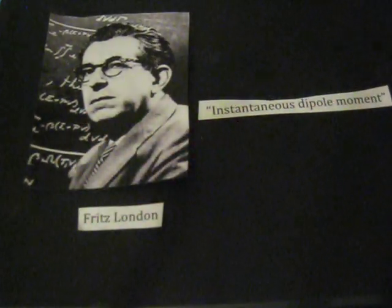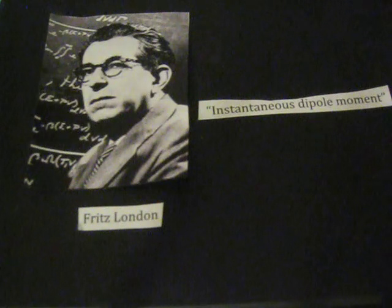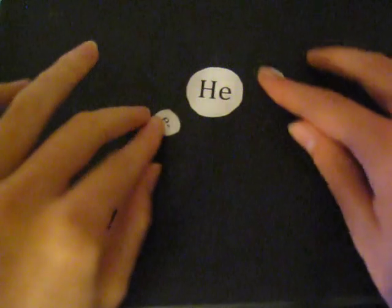This means that as the electrons in a non-polar atom or molecule move around, there are times that one side of the atom or molecule has a higher concentration of electrons, giving it a slightly negative charge and the other side a slightly positive charge.